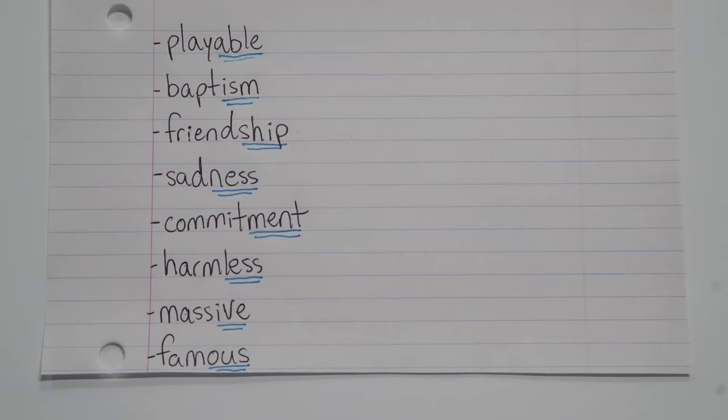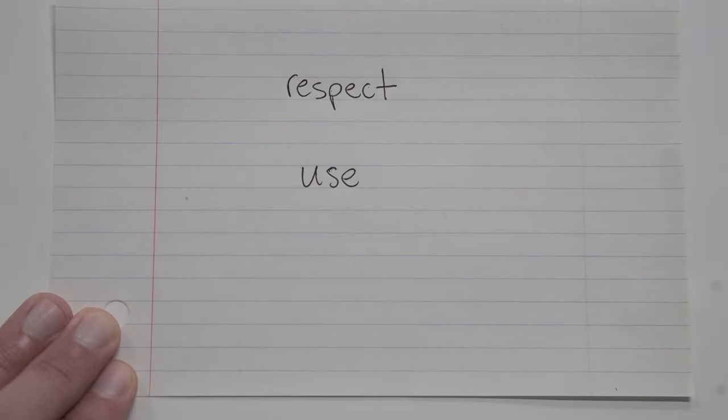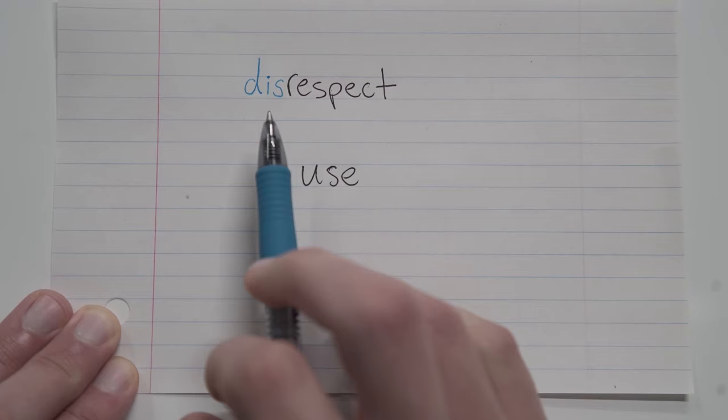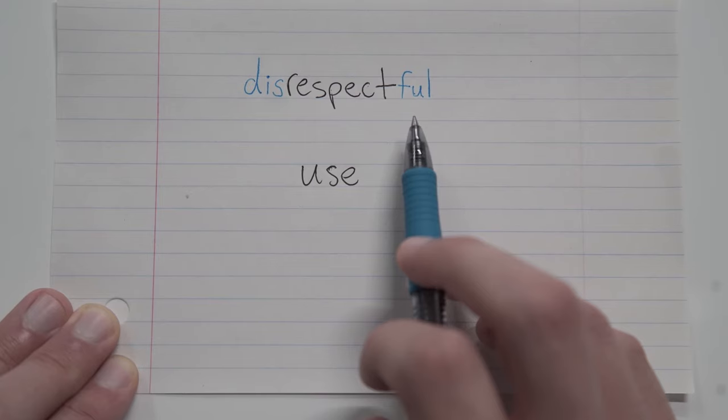Now some words don't just have a prefix or a suffix, they have both. For example, let's take the word respect. Now respect is an idea, it's a concept. We show respect, we earn respect. But what if I added the prefix dis to it? Well, now we have disrespect, which is also an idea, it's also a concept, but it's much more negative. It's the opposite of what I just had. And what if I then add the suffix ful? Well, now I have the word disrespectful, which is a description of someone or something that is not showing a lot of respect, that's maybe treating someone or something poorly.